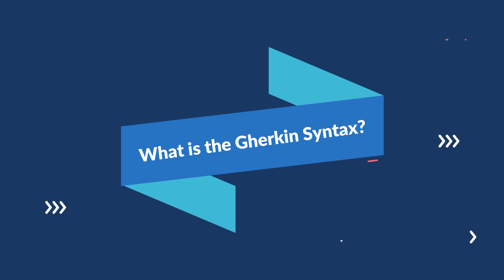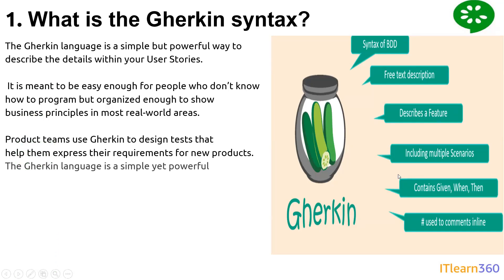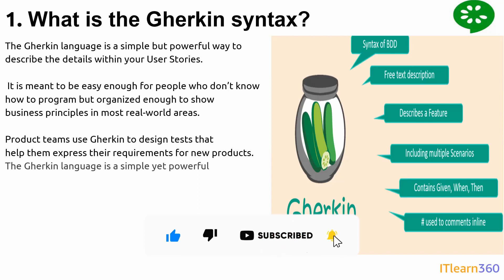So what is Gherkin syntax? Gherkin language is a simple but powerful way to describe the details within your user story. The Gherkin syntax is the syntax we follow while writing test cases in Cucumber. As you can see in this diagram, the parts that come along with Gherkin syntax include: a BDD syntax, a free text description process where we write in a free language, a feature description that we put inside our feature file, and multiple scenarios based on our requirement.